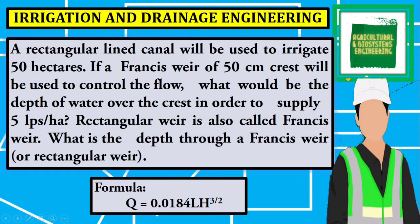Welcome to Agricultural and Biosystems Engineering Tutorials. This time, I will be solving this problem under Irrigation and Drainage Engineering. A rectangular lined canal will be used to irrigate 50 hectares. If a Francis Weir of 50 cm crest will be used to control the flow, what would be the depth of water over the crest in order to supply 5 liters per second per hectare?